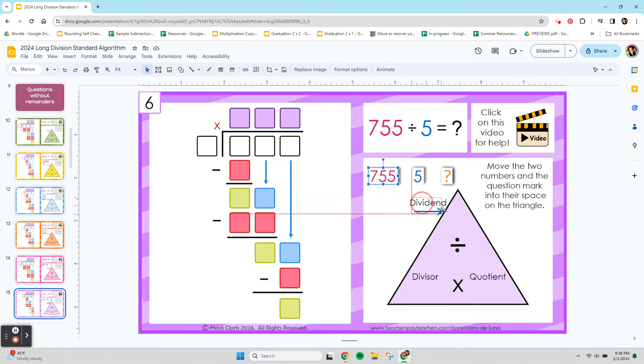and I'm going to show you how to do 755 divided by 5. So our biggest number here is 755. It's the dividend, and it's going to get divided up. Imagine if you had 755 pennies, and you're splitting them into five groups. So it's getting divided by 5. That's the divisor.